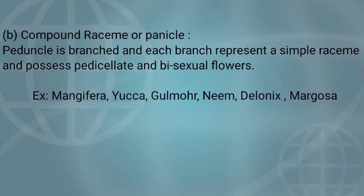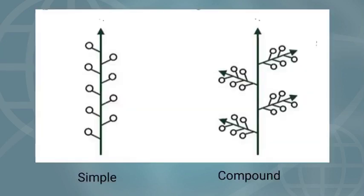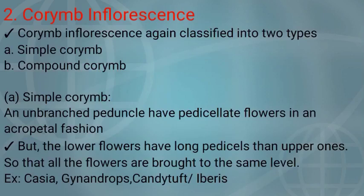Compound raceme is also called panicle. In this, the peduncle is branched and each branch represents a simple raceme, and possesses pedicellate and bisexual flowers. Examples: Mangifera indica (Mango), Yucca, Gulmohar, Neem, Delonix, and Margosa. In the diagrammatic representation of simple raceme, the arrow mark shows indefinite growth; it contains pedicellate flowers in acropetal manner. In compound raceme, it is branched and each branch represents a simple raceme.